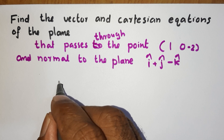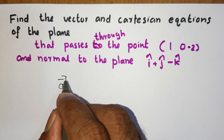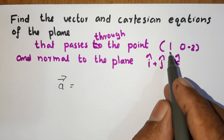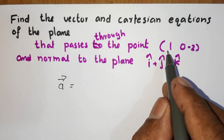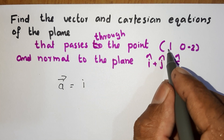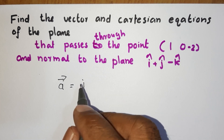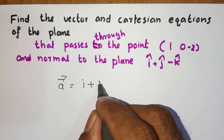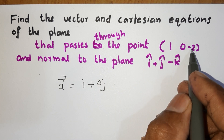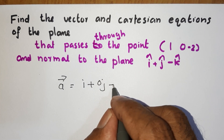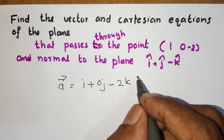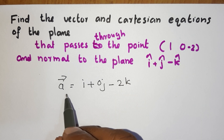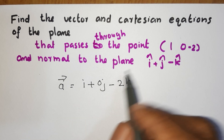The point has position vector a equals i plus 0j minus 2k. This is vector a, the position vector.